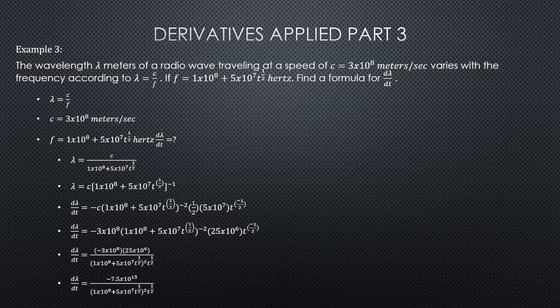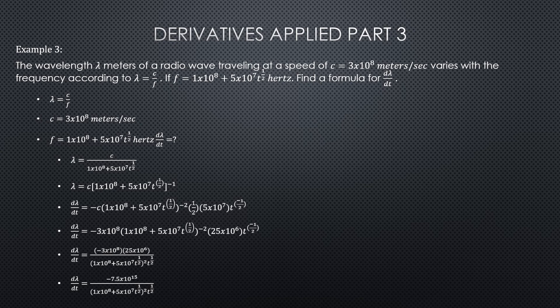Okay, so what do we know? We know lambda is equal to the speed of light divided by frequency. We've got a constant for the speed of light, and we've got a frequency in terms of time.